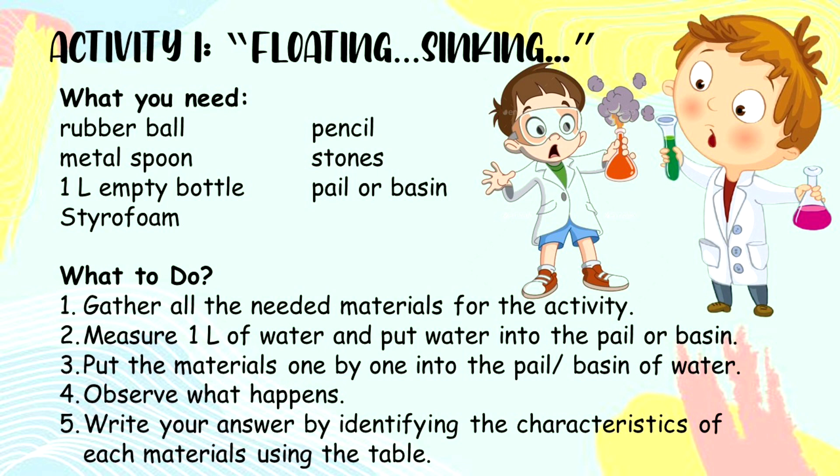These are the steps in doing the activity. Number one: gather all the needed materials. Number two: measure one liter of water and put it into the pail or basin. Number three: put the materials one by one into the pail or basin of water. Number four: observe what happens. Number five: write your answer by identifying the characteristics of each material using the table.